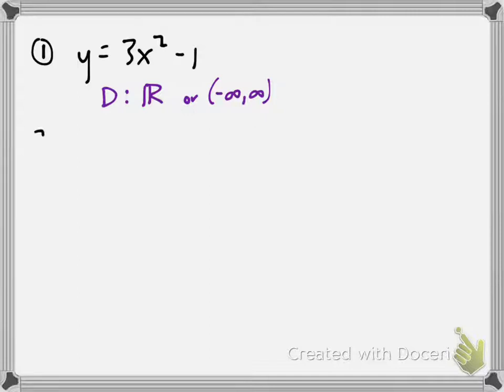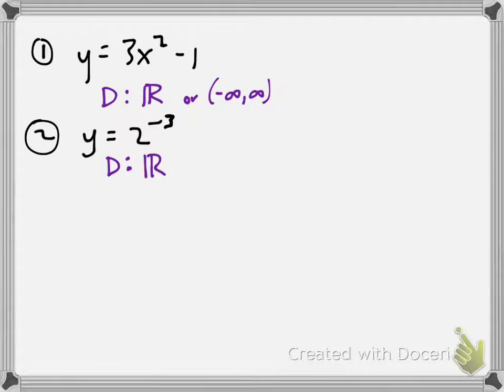Any constant, like 2 to the negative 3rd power — kind of a dressed-up constant — the domain is again all real numbers. You can plug in any value of x; the output is always going to be the same because that's what it means to be constant. So we yawn a little bit when dealing with polynomial functions, because the domain is always all real numbers. Let's spice it up and look at a square root function.